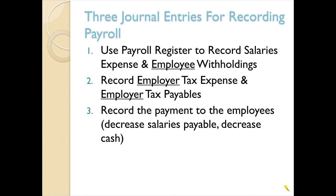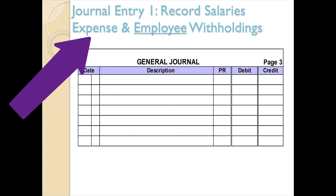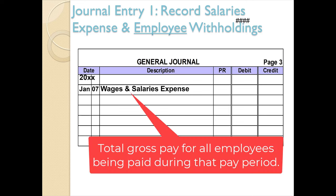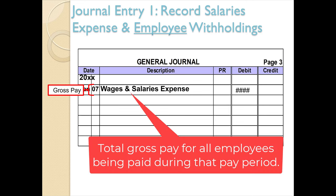The first journal entry is recording salaries expense and the employee withholdings — basically the employee data for payroll. We enter the date, and our only debit is gross pay. The account name will probably be something like wages and salaries expense, wages expense, or salaries expense. The main thing is it's the expense for paying employees, and make sure you remember that it is the gross pay.